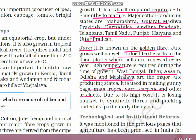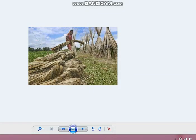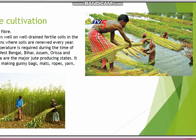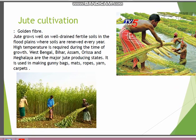Due to its high cost, jute is losing market to synthetic fibers. However, we should avoid synthetic fibers and shift towards jute because it is eco-friendly. The pictures here show how jute is dried and processed, clearly showing the water requirement for jute processing, and jute products made into gunny bags, mats, ropes, yarn and carpets.